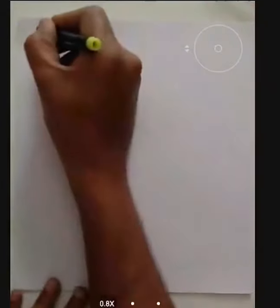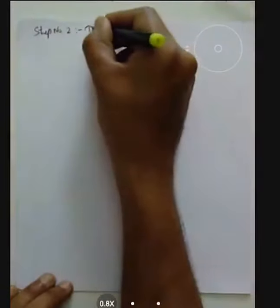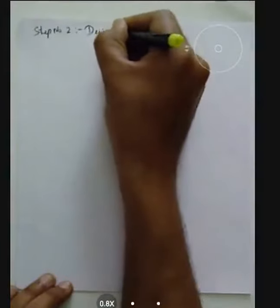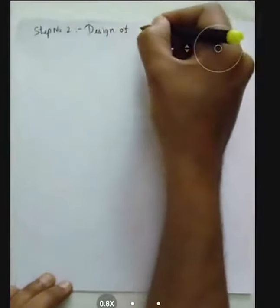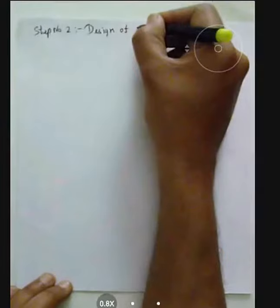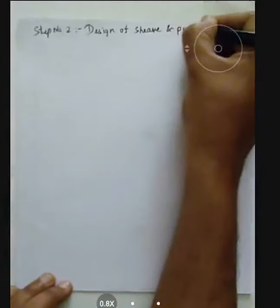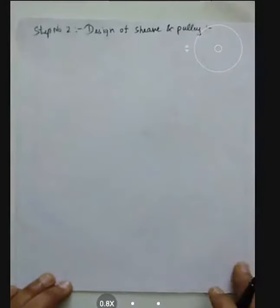Step 2 is the design or selection of the sheave and pulley. The name is taken directly from PHG, so we are not changing it. This step involves selecting the pulley, and the reference is PHG 9.10 for the design of sheave and pulley.